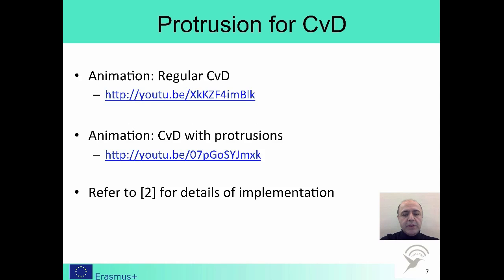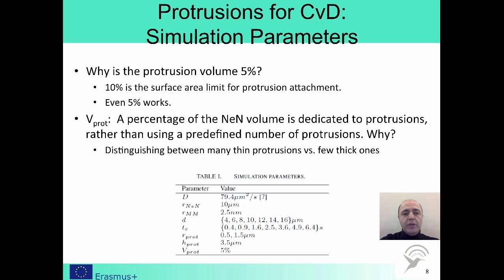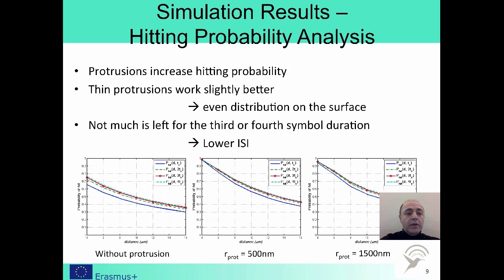You may find the details of the implementation in the second paper in the references section. In our simulations, we have dedicated only 5% of the volume for protrusions. For a fair analysis, we have compared the use of many thin protrusions against fewer thick ones, with the total volume of protrusions being the same in both cases. We analyze the effect of utilizing protrusions on the hitting probability. The leftmost graph is the regular case without protrusions, whereas we have protrusions with radius 500 and 1500 nm for the other two graphs.